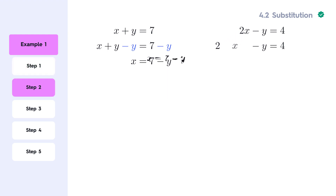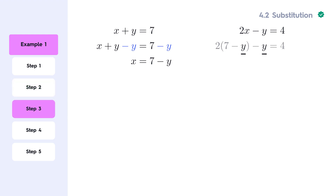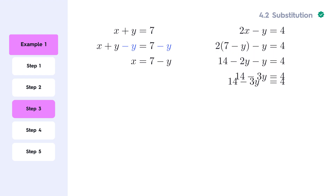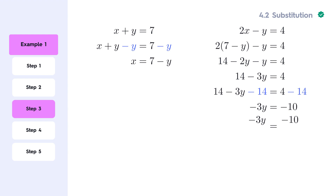Now that we have this, we substitute this expression into the second equation. Now we have a one-variable equation and can solve for y. Let's start by distributing the two and combining like terms. Let's now subtract 14 from both sides. If we divide both sides by negative 3, we get the value of y, which is 10 over 3.